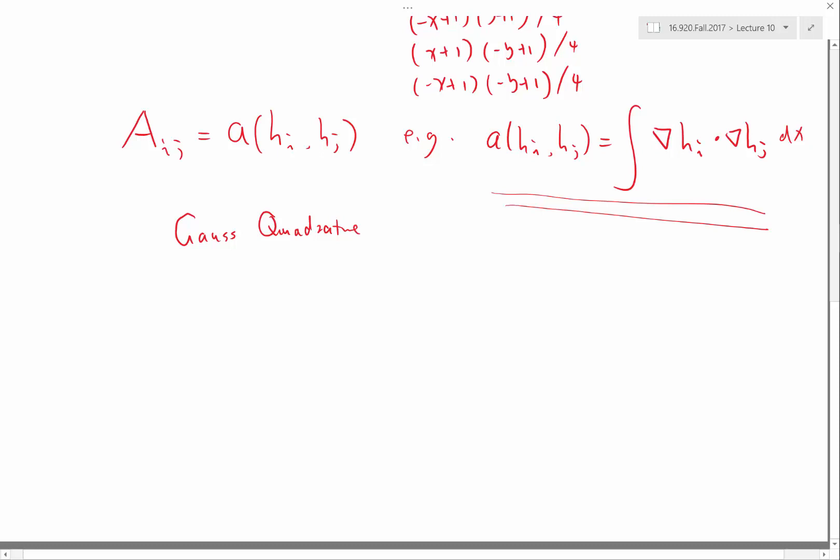So Gauss quadrature is a way to compute very accurate integrals for arbitrary smooth functions. And in finite element, we are usually looking at very smooth functions in every single element.